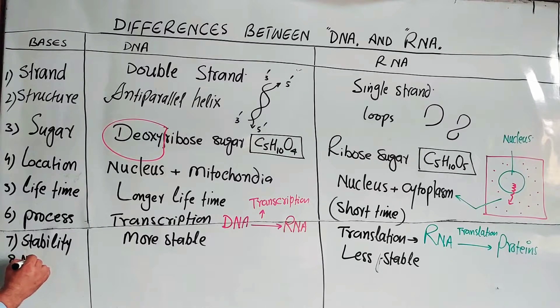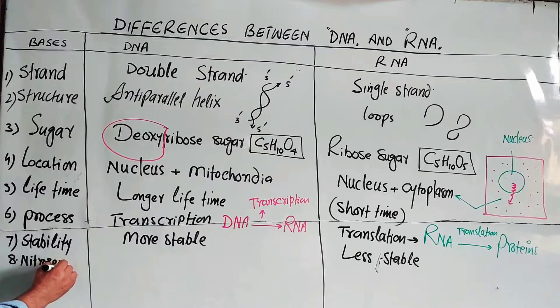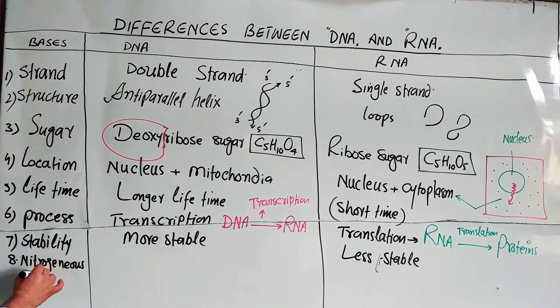The next difference is the nitrogenous bases. DNA and RNA differ in one of their nitrogenous bases.